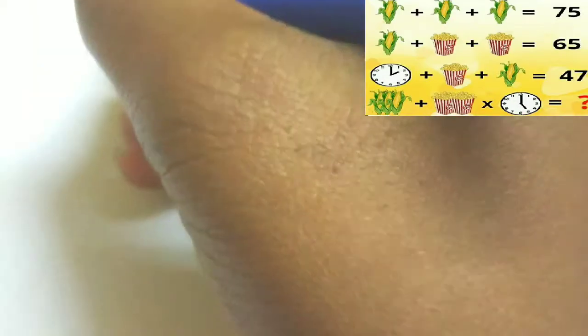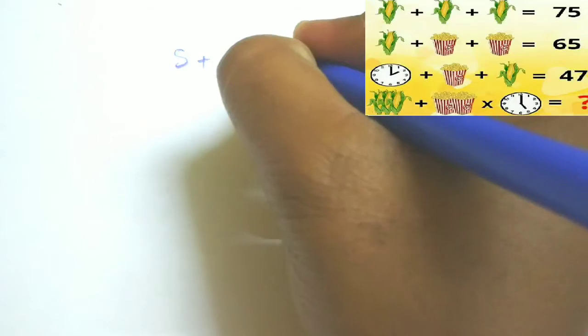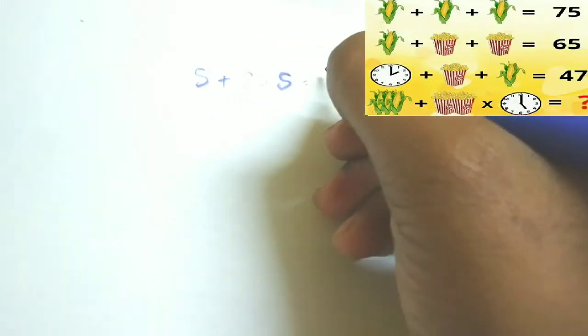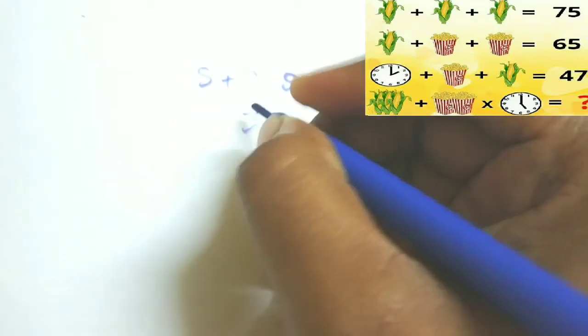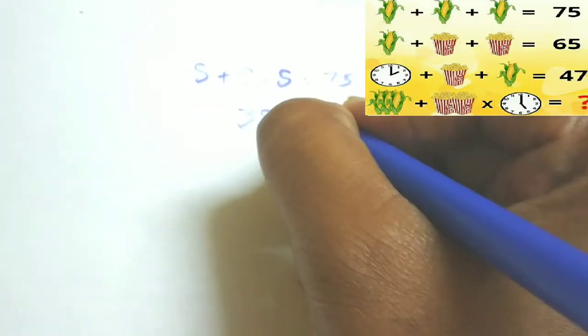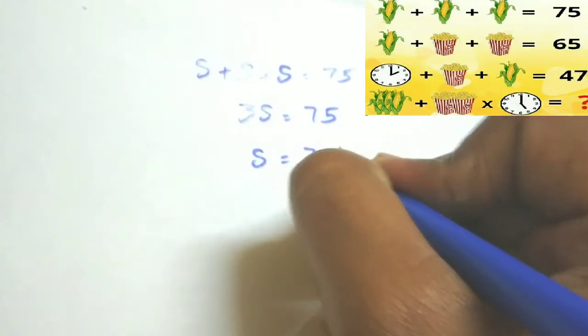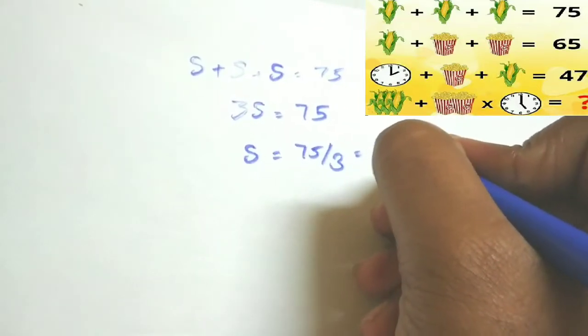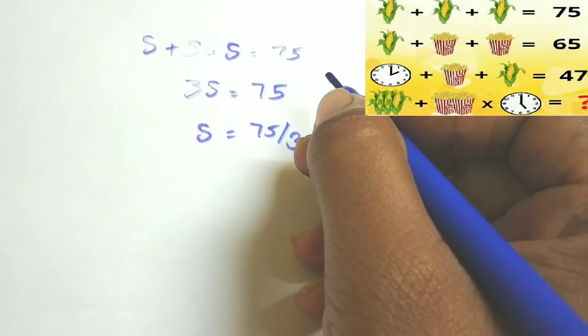So the sum of those three sweet corns is equal to 75 they given. That means three sweet corns is equal to 75, so single sweet corn value will be 75 by 3 is equal to 25. 25 is the sweet corn value we will get.